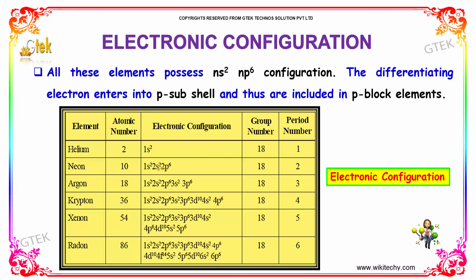You are able to see the configurations: 2s2, 2p6, 3s2, 3p6, 4s2, 4p6, 5s2, 5p6, and 6s2, 6p6. These are the electronic configurations of the noble gases.